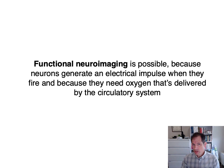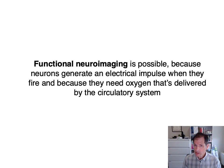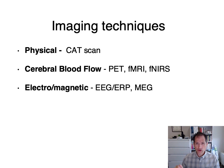When a neuron fires, it generates an electrical impulse in order to activate additional neurons. And when neurons are firing, they also require oxygen, and that's delivered by the circulatory system. So we have electrical impulses that can be measured, and we have cerebral blood flow, which can also be measured. Let's talk about the ways those can be done.